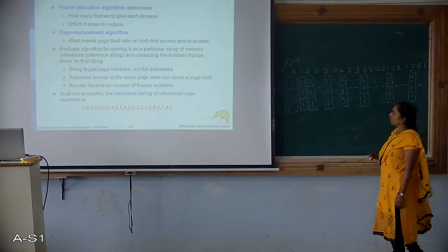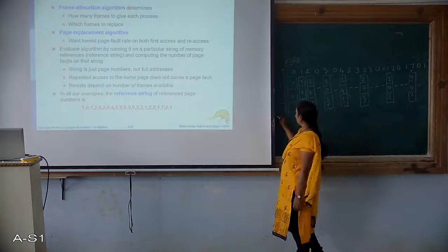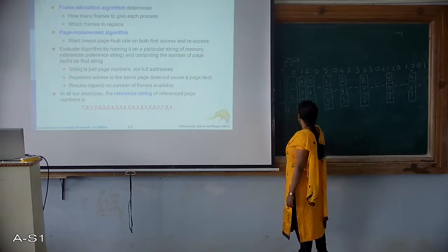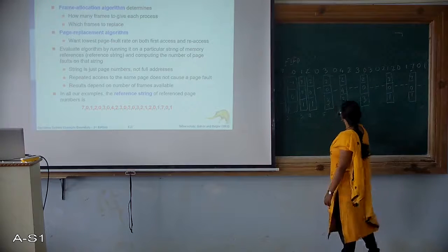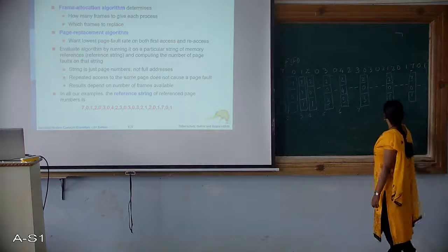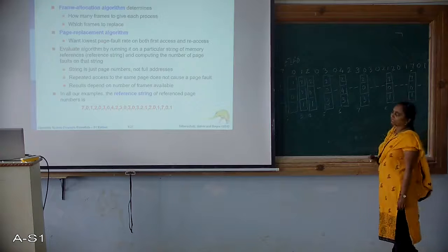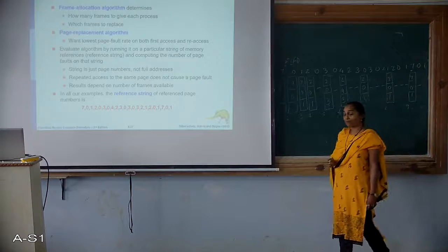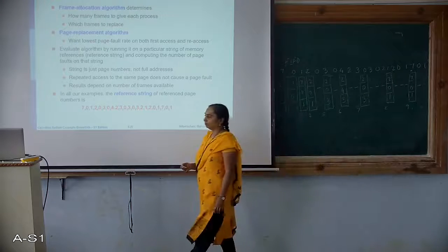So how many page replacements do we have here? Counting: 1, 2, 3, 4, 5, 6, 7, 8 and 9. Total number of page faults using optimal are 9.